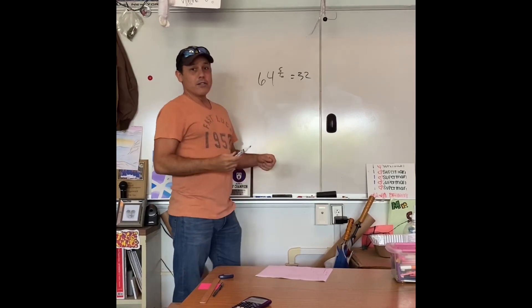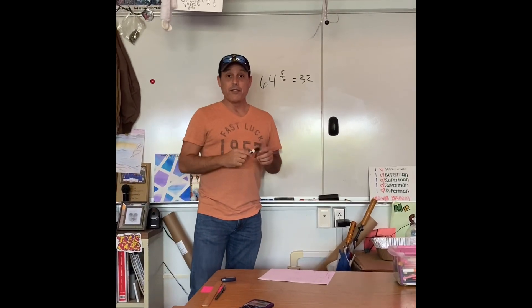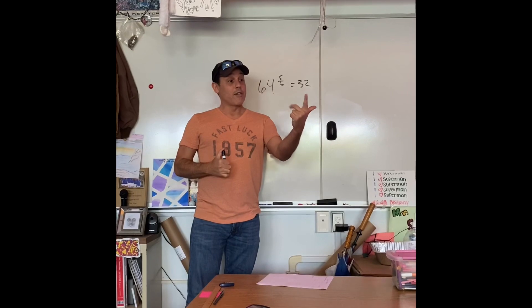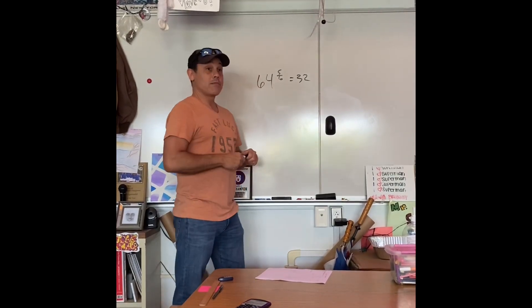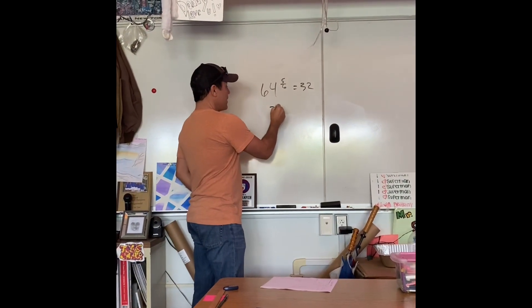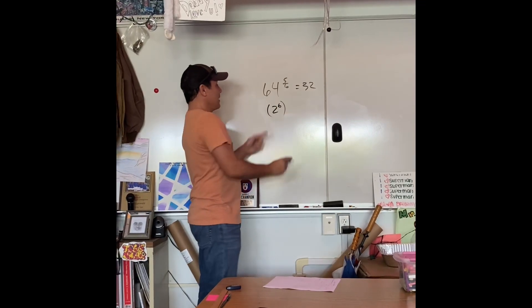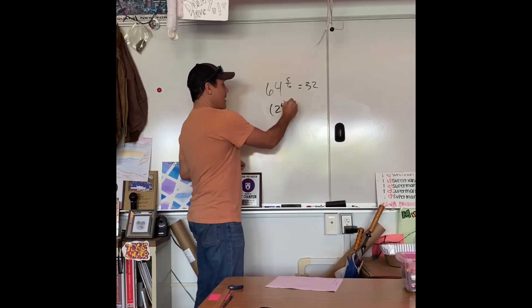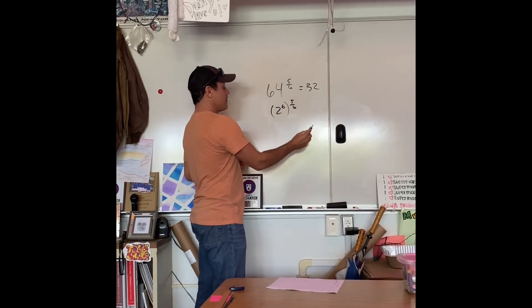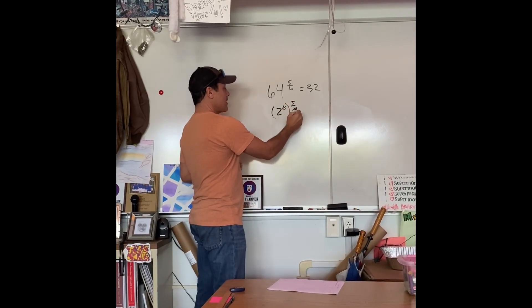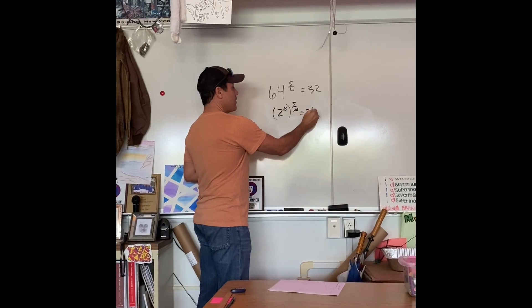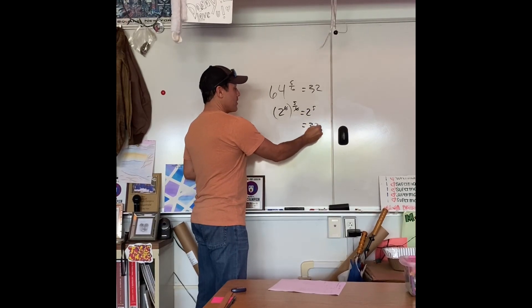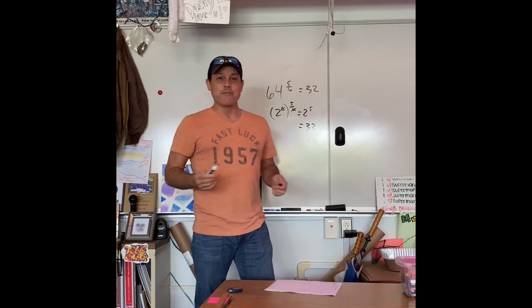Well, we all know from probability 2 to the 5th is 32. 2, 4, 8, 16, 32. So, guess what 2 to the 6th is? 64. So, if we take 2 to the 6th, we convert or rewrite 64 as 2 to the 6th, and we raise that to the 5 sixths. Well, check it out. The 6th is canceled. We're left with 2 to the 5th, which equals 32. It's a Christmas miracle.